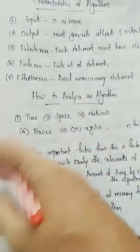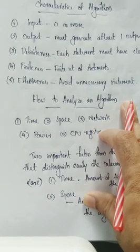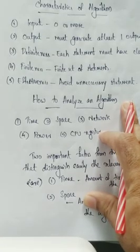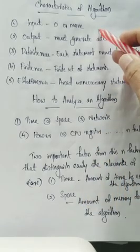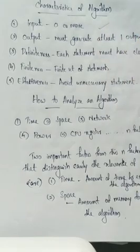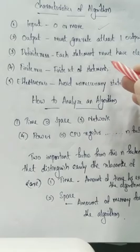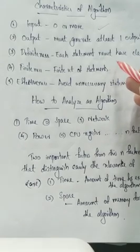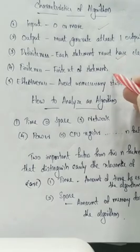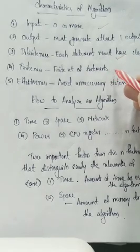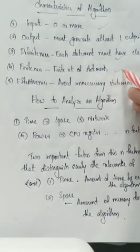These are the characteristics of an algorithm. The first characteristic is input — zero or more number of inputs. At least one output is required. Definiteness is the third characteristic, meaning each step must be clear and unambiguous. It must be a finite set of statements.